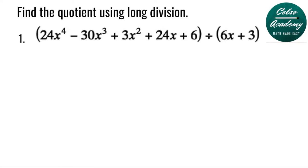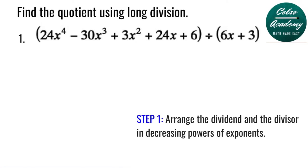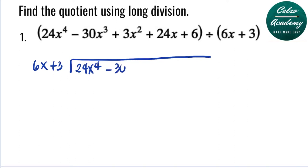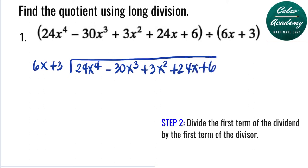Find the quotient using long division: 24x to the 4th minus 30x cubed plus 3x squared plus 24x plus 6, divided by 6x plus 3. First we check both the dividend and divisor to ensure they have decreasing powers. The terms are already arranged in descending powers, so we set up the long division. Our divisor is 6x plus 3, written outside the division sign, and the dividend is inside.